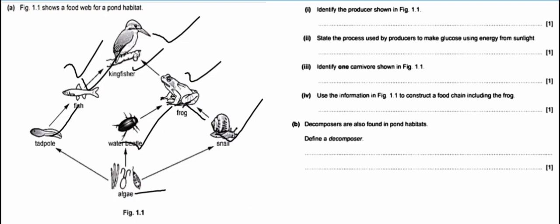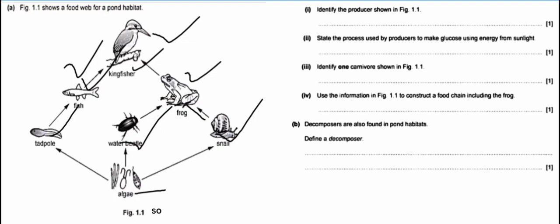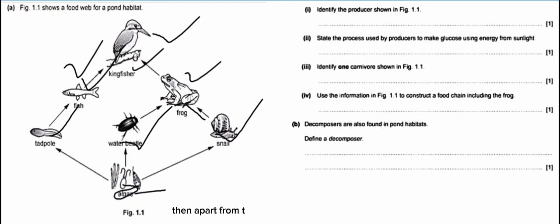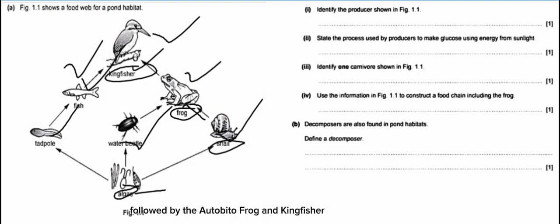Roman number four: use the information in figure 1.1 to construct a food chain including the flock. A food chain is a linear series of interactions between living organisms. To construct it we start with the producers: algae, then snail, then flock, then kingfisher. Alternatively, we can go: algae, then water beetle, then flock, then kingfisher. Either of those is a valid food chain.